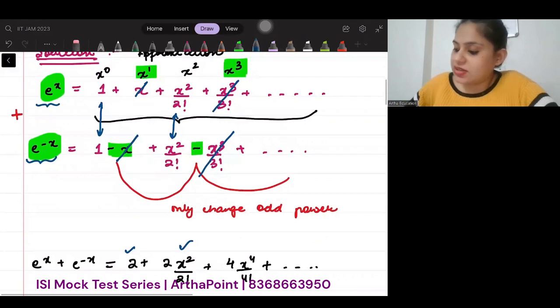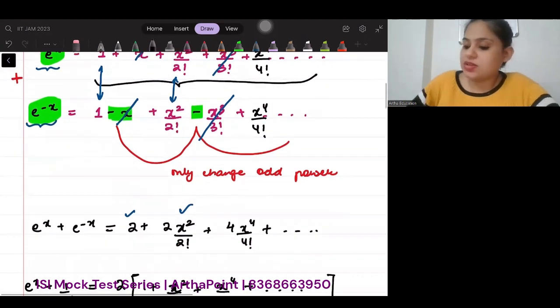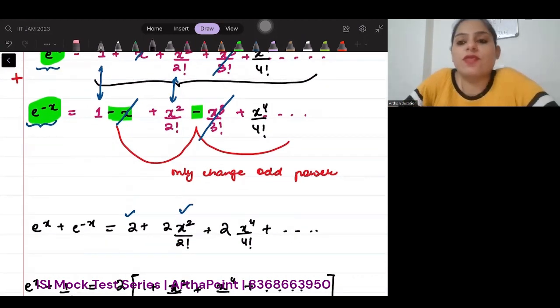And then, I can go ahead and add the next one. So, here I have x to the power 4 by 4 factorial. Added together, this will also give me 2 times x to the power 4 by 4 factorial. So, I will get them double.